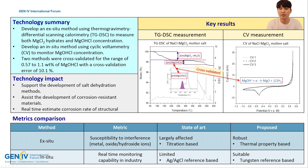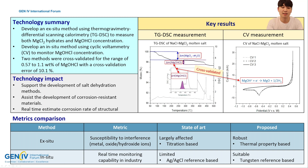The developed methodology for moisture measurement in magnesium chloride-based molten salts can be utilized in dehydration method development, corrosion-resistant material development, and real-time corrosion monitoring. It can contribute significantly to the development and maintenance of molten salt reactors. Lastly, thank you very much for listening to my presentation. Have a nice day!